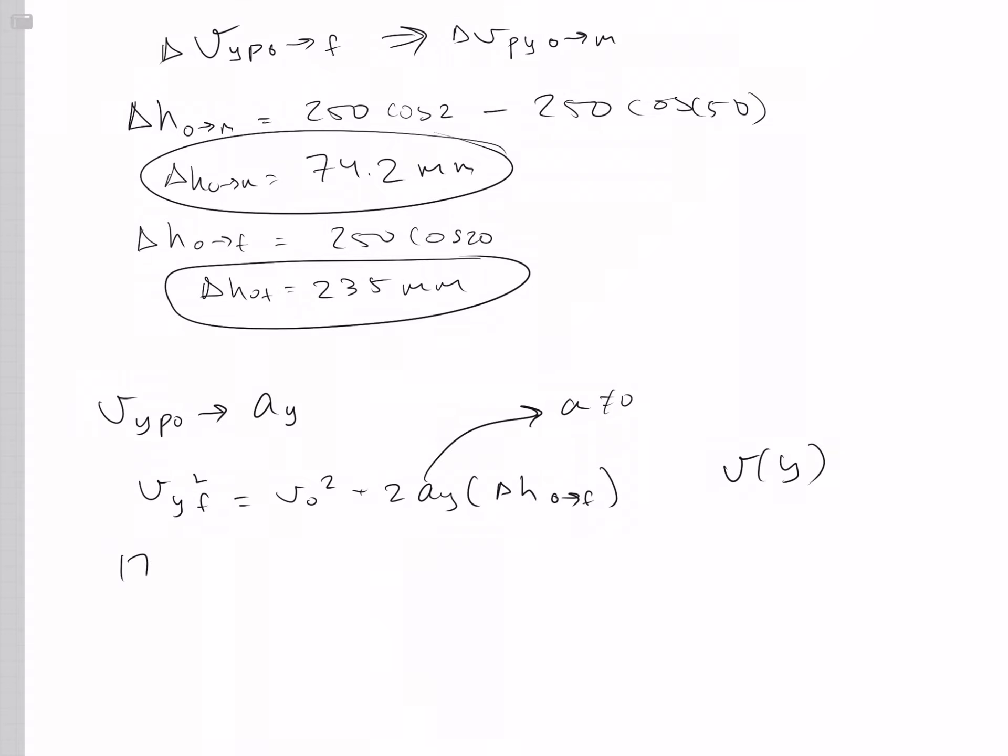Okay. So 175 squared, which is that final velocity, plus zero, plus A Y times 235. And that makes A Y equal to 65.2 millimeters per second squared.